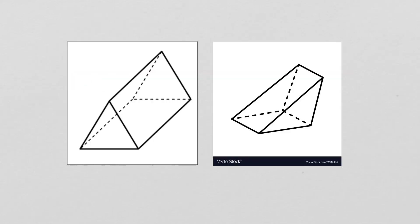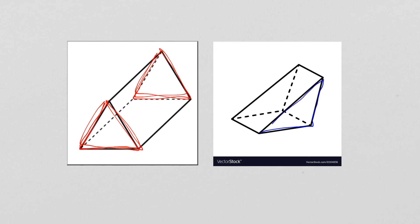Triangles are a little tricky because not all triangular prisms look alike — make sure you're always identifying the base properly. On the left example, the triangular base is at the end of the prism with an identical triangle on the other end. On the right example, the triangle is oriented differently but it's still the base. Don't get confused by that.